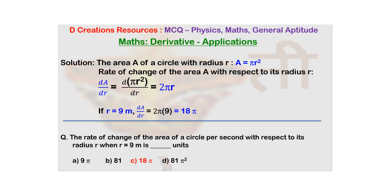And now if the radius has been given to you as 9 meter, the answer is going to be 18π. So here c is the correct answer. Thank you.